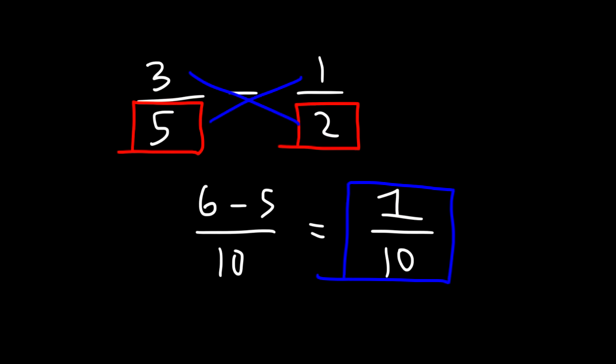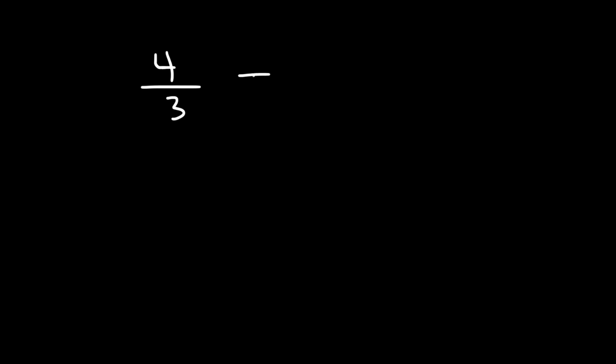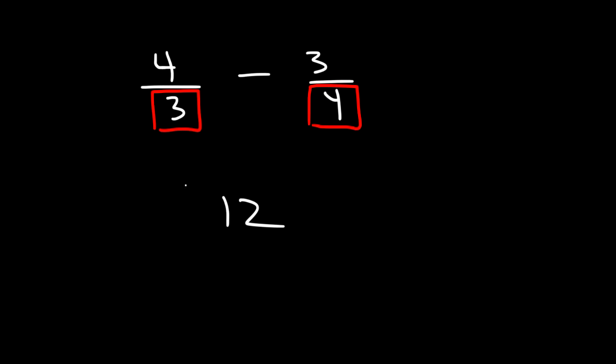So the final answer is 1 over 10. That is the solution to this problem. Now let's work on another one: subtract 4 over 3 by 3 over 4. Using the same technique, first let's multiply the 2 denominators. 3 times 4 is 12.